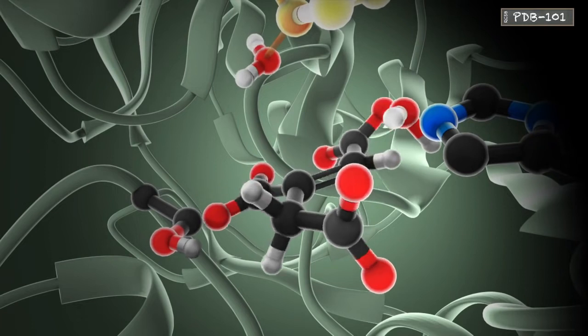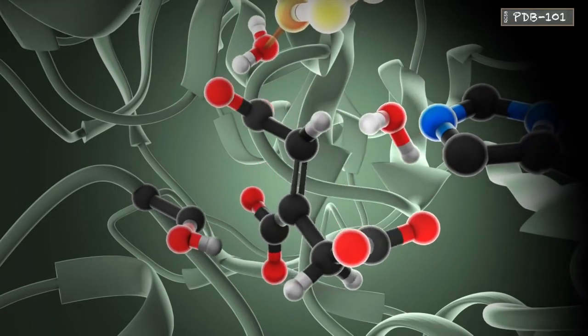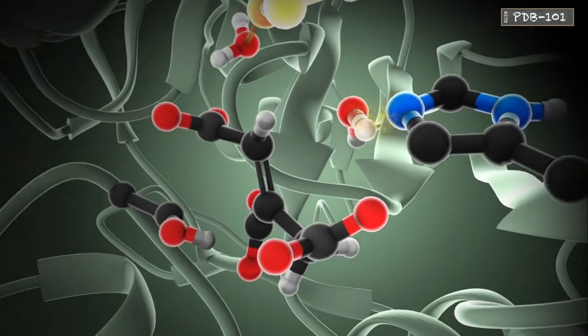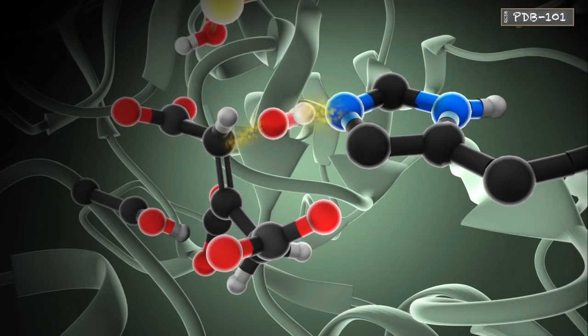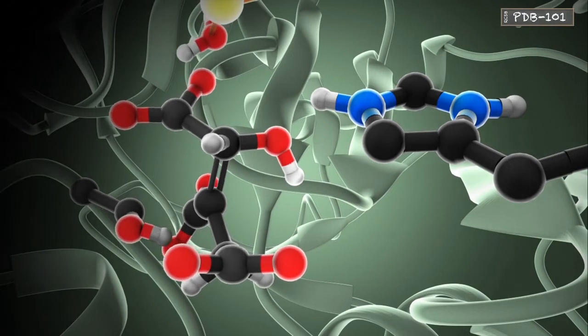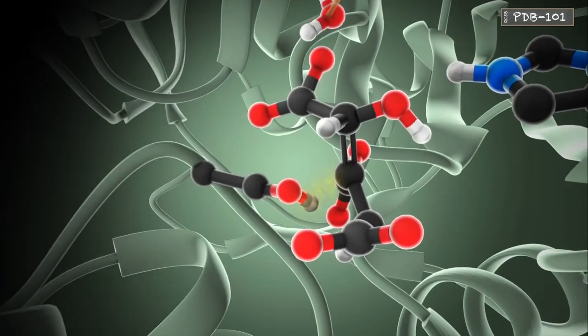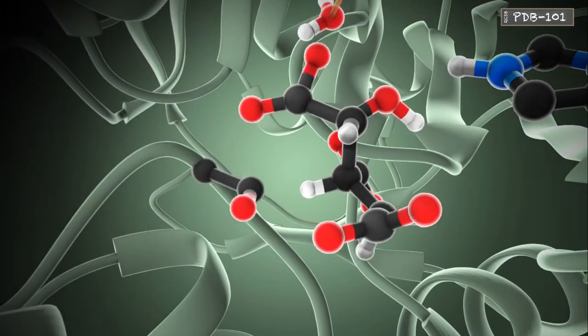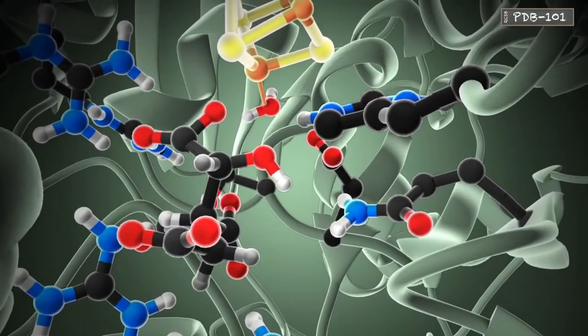Cis-aconitate then flips upside down and the complementary hydration reaction is performed. In this step, histidine grabs a hydrogen atom from a passing water molecule, placing the resulting hydroxyl group back onto the substrate. Serine then returns its hydrogen atom, and the final product isocitrate is released.